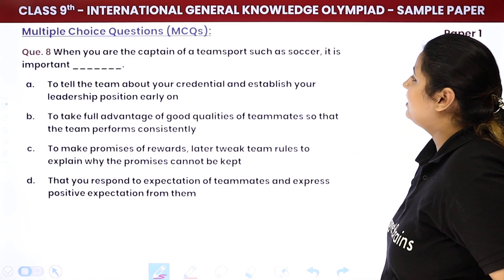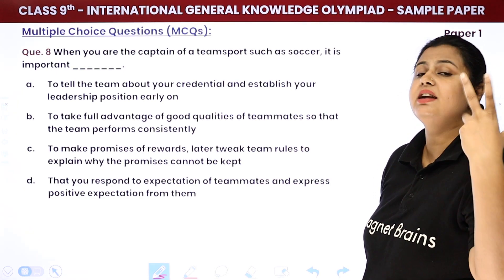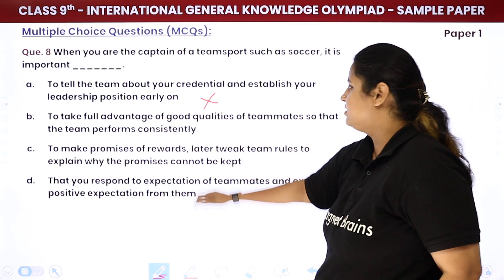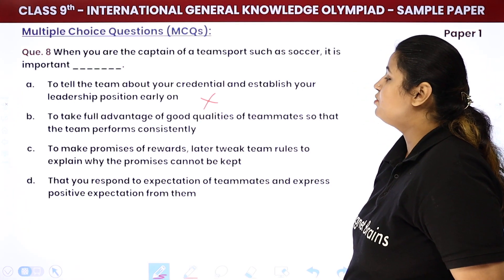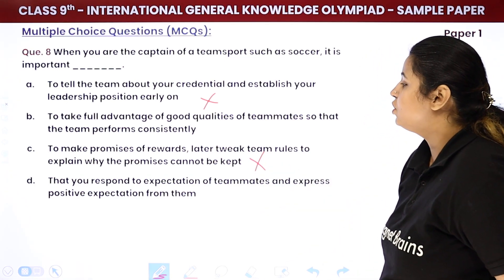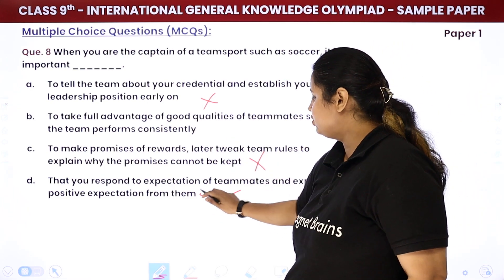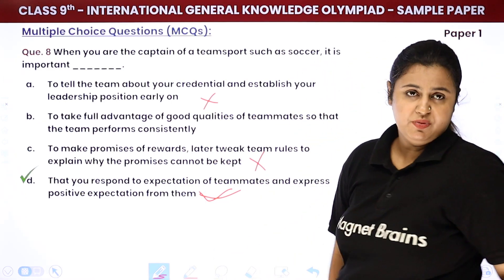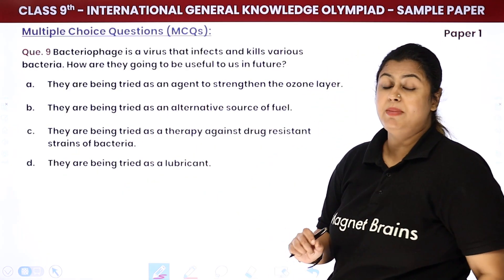This is a life skills question. When you are captain of a team sport such as soccer, what is the most important thing to do? The options include: telling the team about your credentials to establish leadership early on — of course not, that is very rude. Taking full advantage of the good qualities of teammates so the team performs consistently. Making promises of rewards later, then tweaking team rules to explain why those promises cannot be kept — that is ethically wrong. Showing that you respond to expectations of teammates and expressing positive expectations from them. Personally, I would go with the fourth option. So this seems to be the right answer.